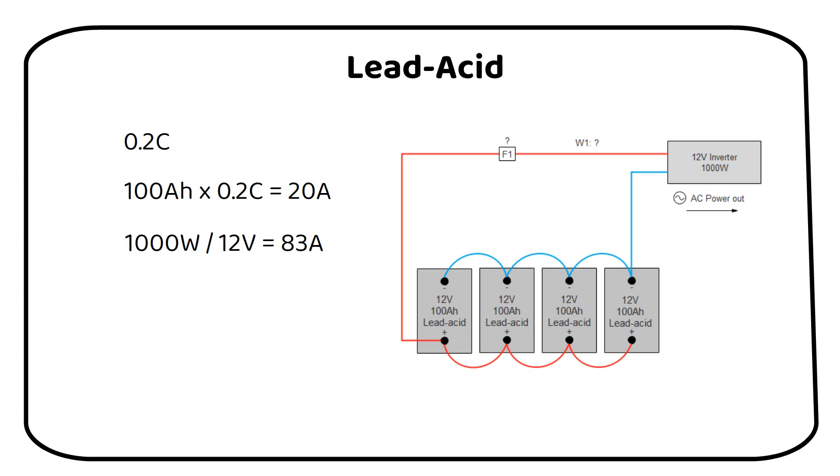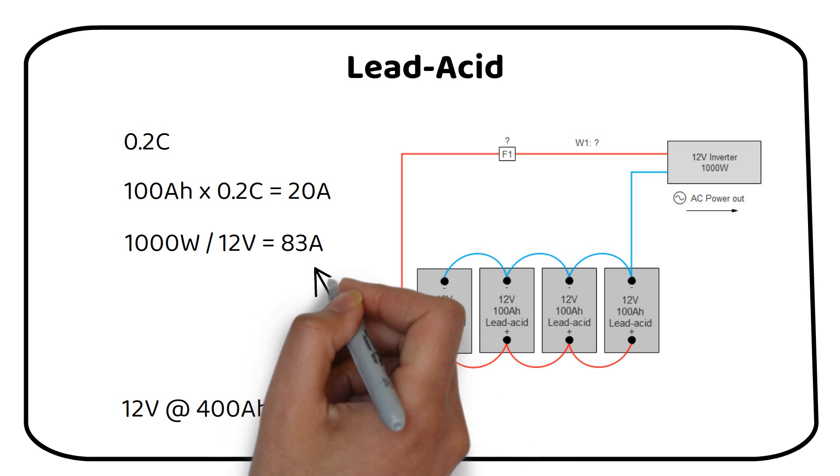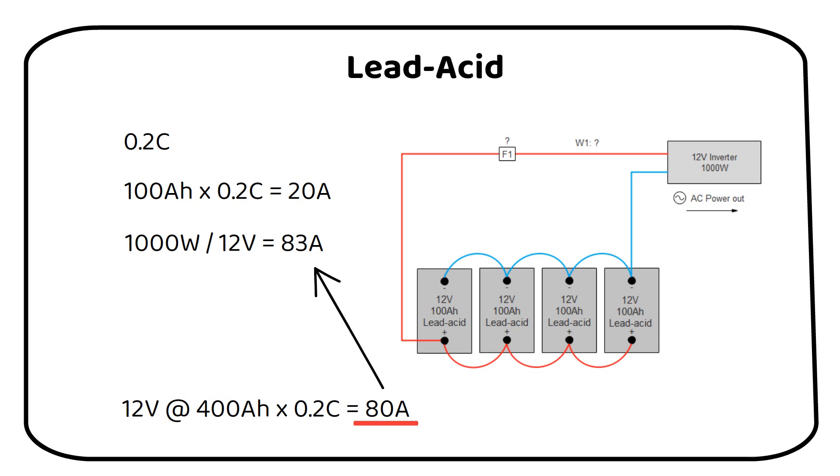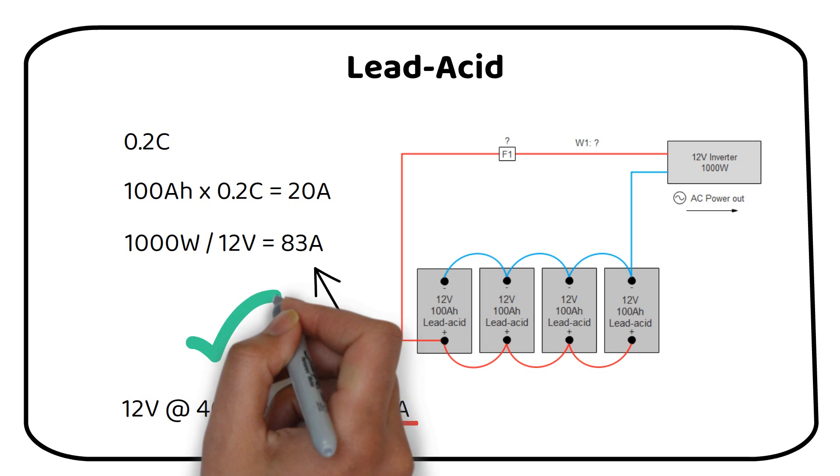We now have a battery bank of 12 volts and 400 amp hours. Let's find out the maximum current we should draw from the battery. We can see that we can draw a current of 80 amps. This is very close to the calculated current the inverter will draw which was 83 amps. Now the system is perfectly sized for a lead acid battery.